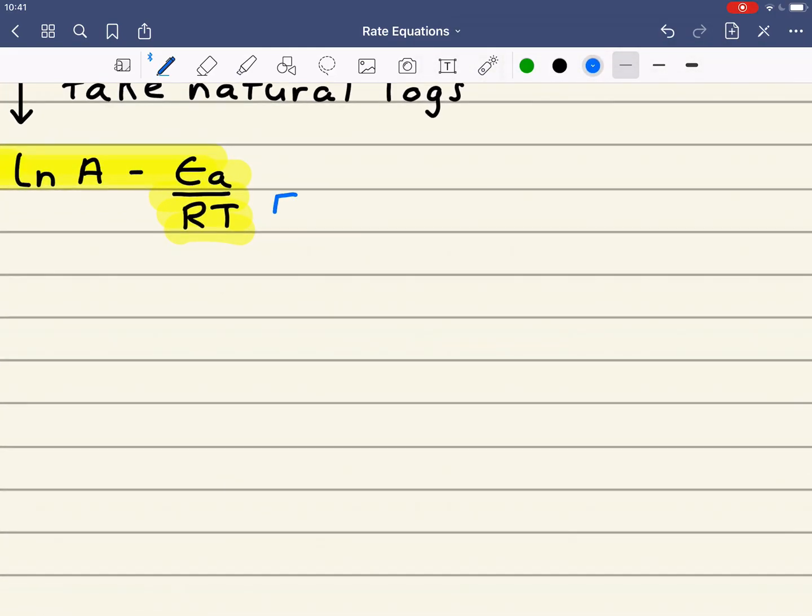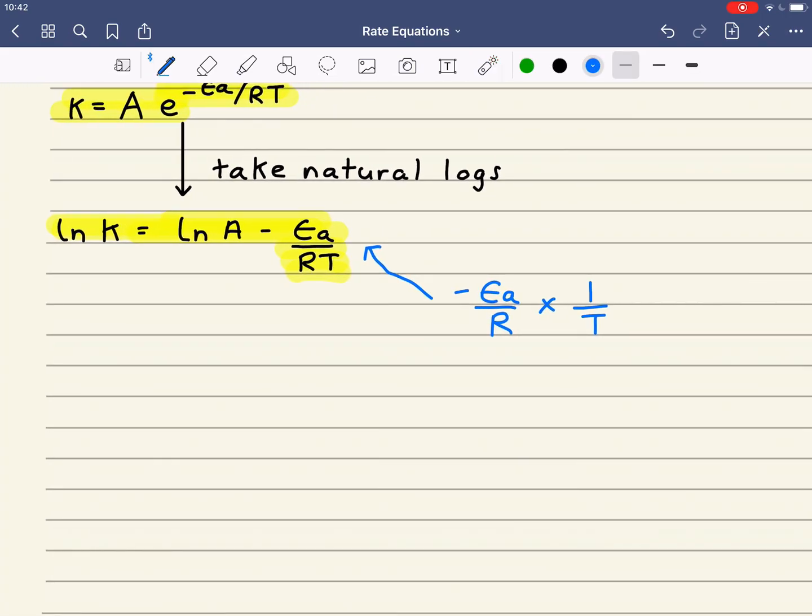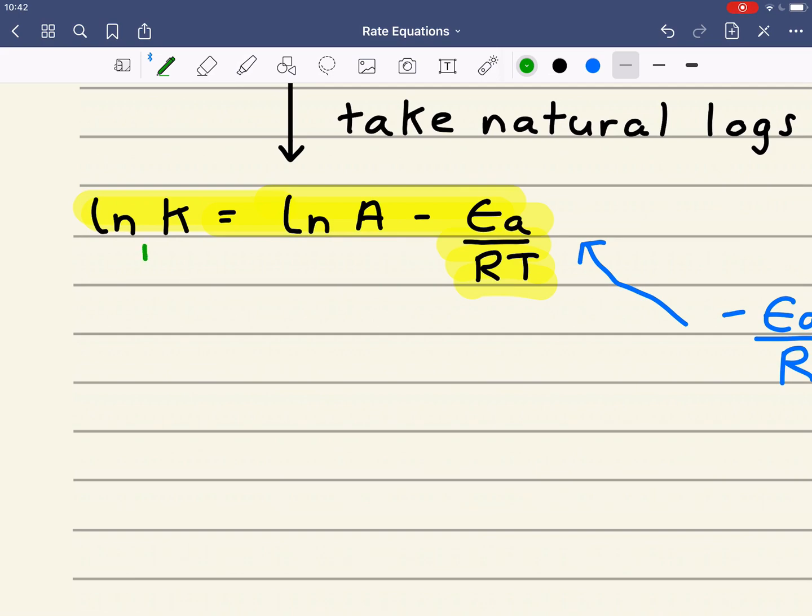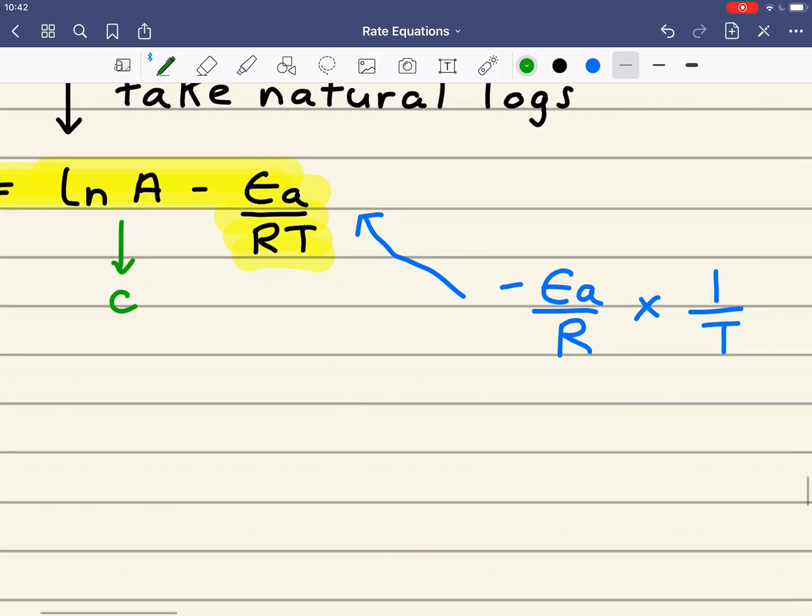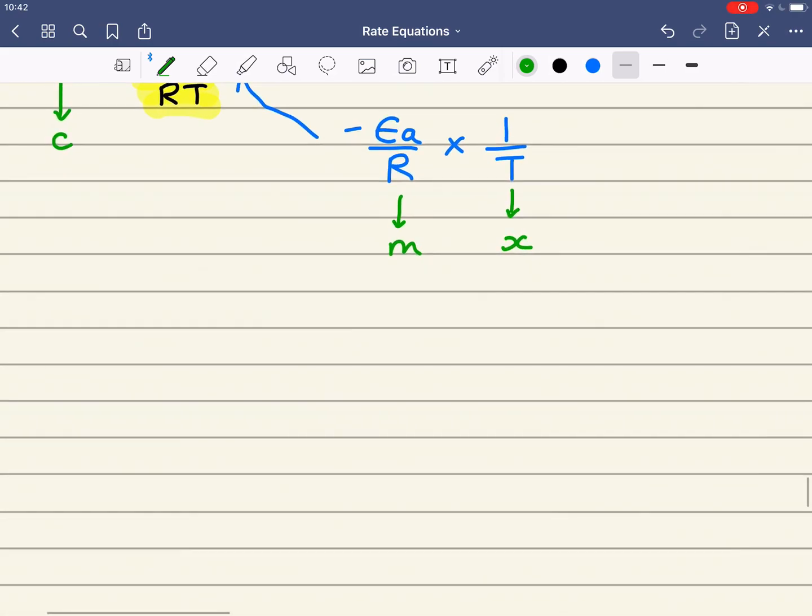In order to see that, we need to expand this minus Ea over RT term into minus Ea over R times 1 over T. These two values here are equivalent to this value here. So we said that it's in the form of an equation for a straight line. This is my y, lnA is my c, my gradient is minus Ea over R, and 1 over T is my x.